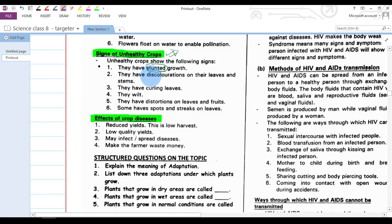They have discolorations on their leaves and stems, meaning their leaves and stems are discolored. Instead of them being green, you find them having yellow color. That is a sign of an unhealthy crop.